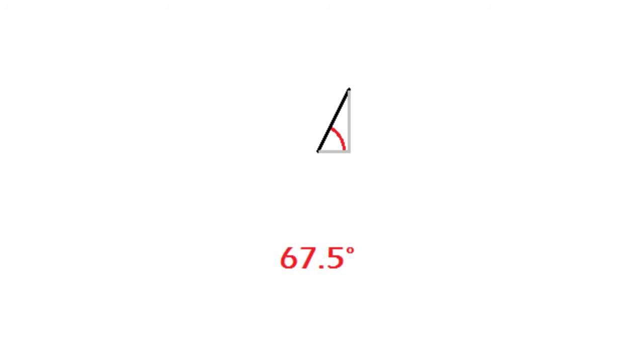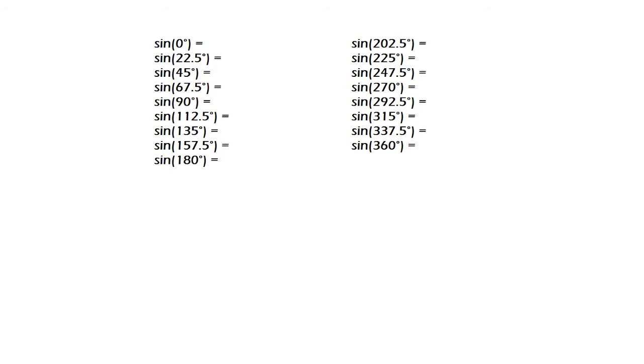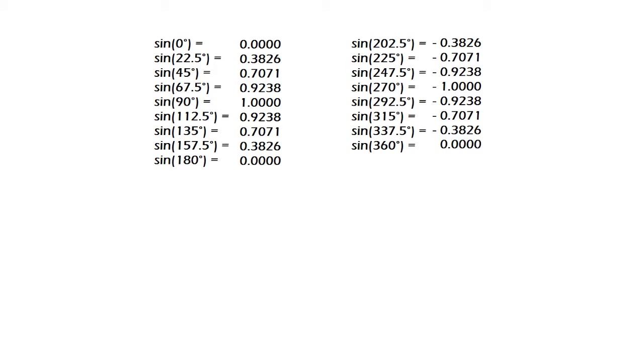If we vary the angle we are introducing into a trigonometric function, geometrically we are rotating a straight line which acts as the hypotenuse of a right triangle. Now if we calculate the sine for each of these angles, we obtain these results.